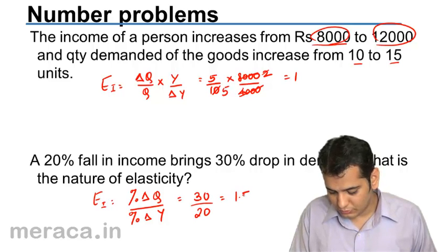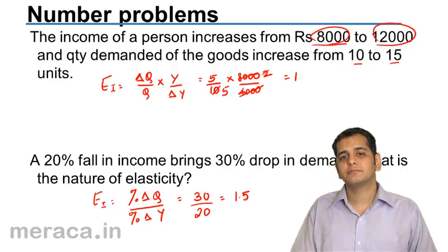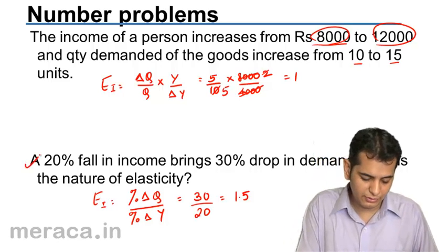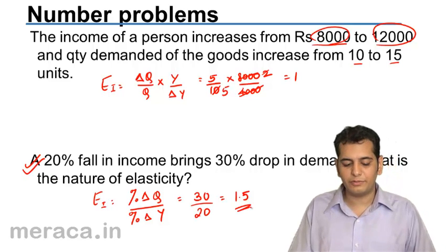The answer is 1.5. So, we can say the income elasticity of demand in this case is 1.5.